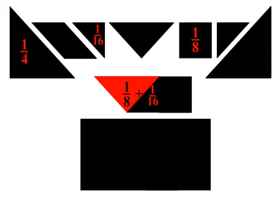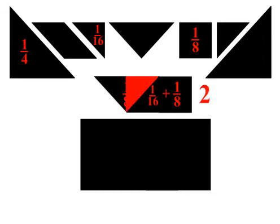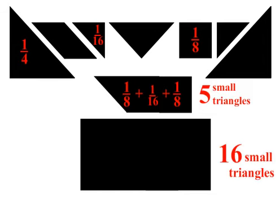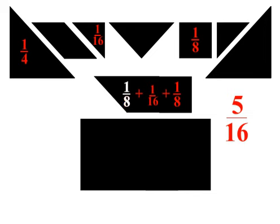Let's look at another combined shape: the small triangle, medium triangle, and square. Together these are 1 sixteenth plus 1 eighth plus 1 eighth of the rectangle. The combined shape can be covered by 5 small triangles, and there are 16 small triangles in the rectangle, so the combined shape is 5 sixteenths. So 1 sixteenth plus 1 eighth plus 1 eighth equals 5 sixteenths.